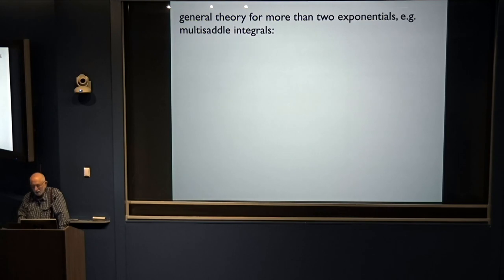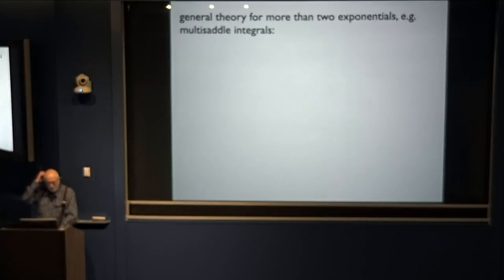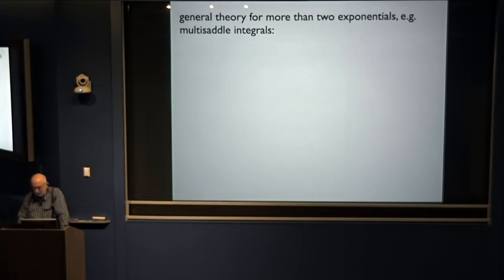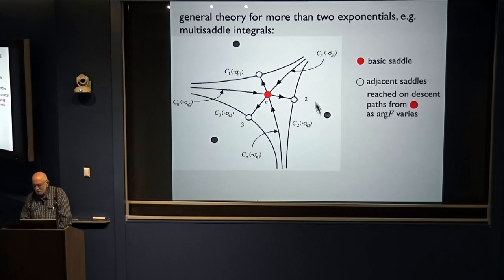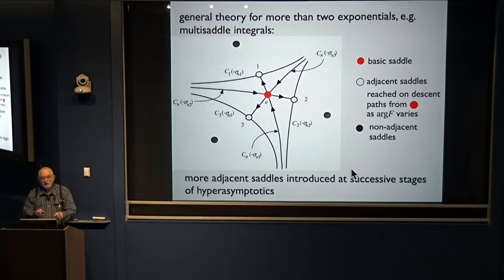For more general situations, let's talk about integrals with a number of saddle points — a very common situation in physics. Sometimes these other saddle points are called instantons, though terminology varies with the subculture of mathematical physics. Here's an integral through a particular saddle — call it the basic saddle. There's a topological concept of saddles adjacent to this one: you change the phase of your large parameter, the steepest-ascent contour changes, and as you do that you will hit other saddles — these are the adjacent saddles. There are also non-adjacent saddles that appear at more successive stages of hyperasymptotics.